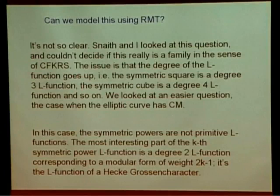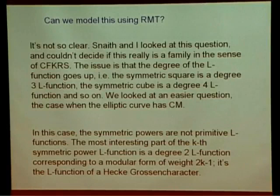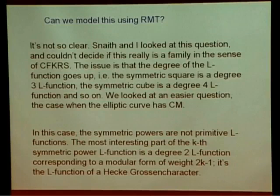So we looked at an easier question: suppose you start with a CM elliptic curve and do its symmetric powers. Then it's not a primitive L-function anymore, but the new part with each symmetric power is just the L-function of a Hecke character — basically the L-function of a modular form with increasing weight. So it's like looking at a family where you take one L-function, or take a modular form of weight K for an increasing sequence of K's.